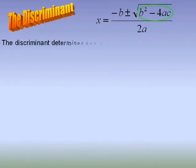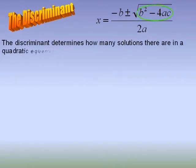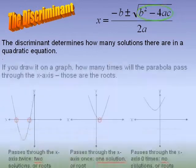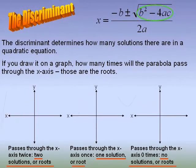The discriminant determines how many solutions there are in a quadratic equation. If you draw it on a graph, how many times does the parabola pass through the x-axis — those are the roots. It's b squared minus 4ac.